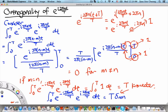This tells us that these two functions are actually orthogonal over the time interval 0 to T. Over one period, these two complex exponentials are orthogonal to each other. This is what we mean by the orthogonality relation for the complex exponentials.